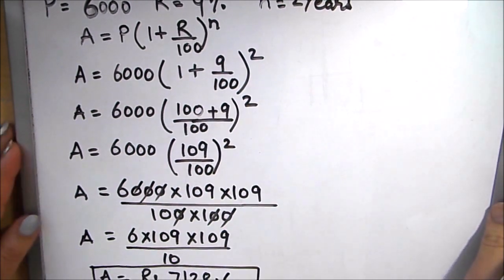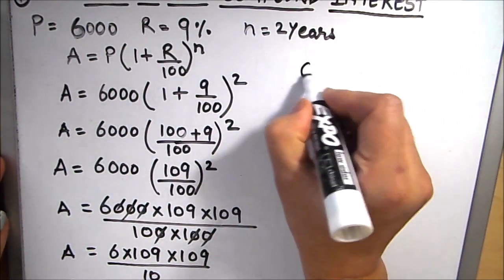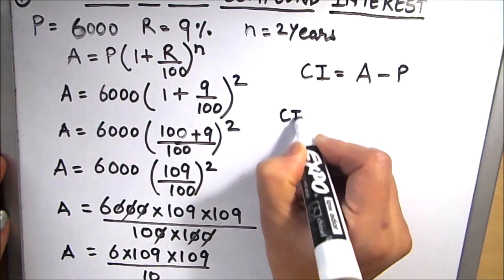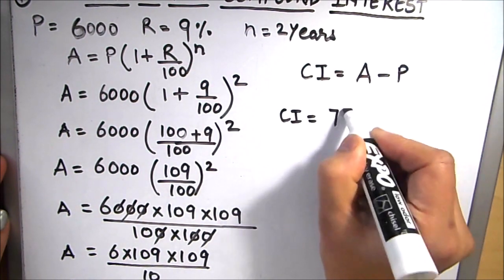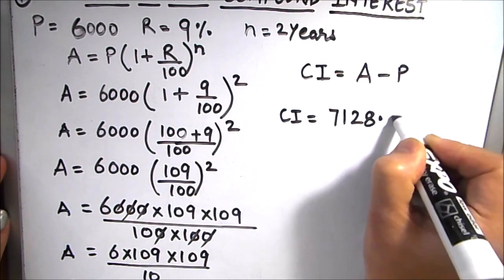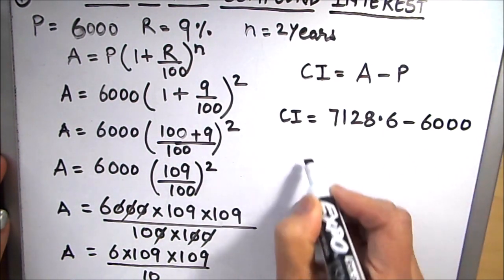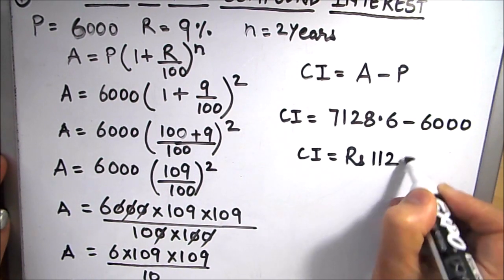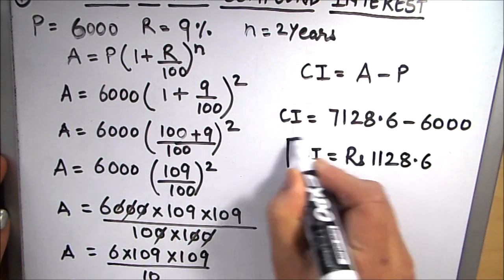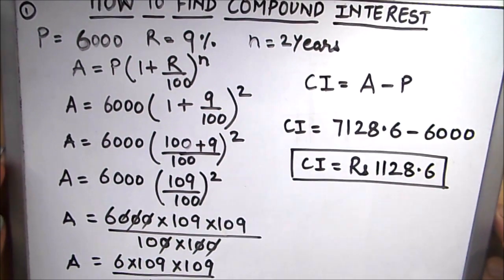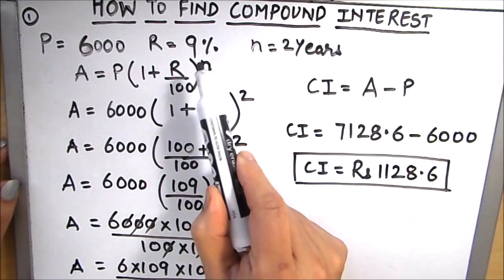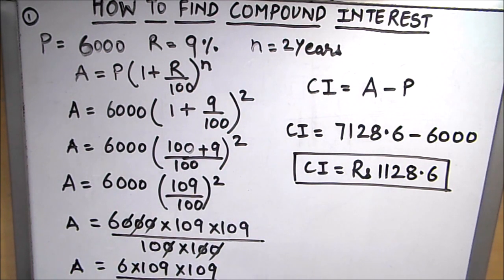So the amount comes out to be 7128.6 rupees. Now we find the compound interest: CI equals Amount minus Principal, which is 7128.6 minus 6000, giving us a compound interest of 1128.6 rupees. This is the compound interest when a principal of 6000 rupees is compounded annually for 2 years at a rate of 9%.